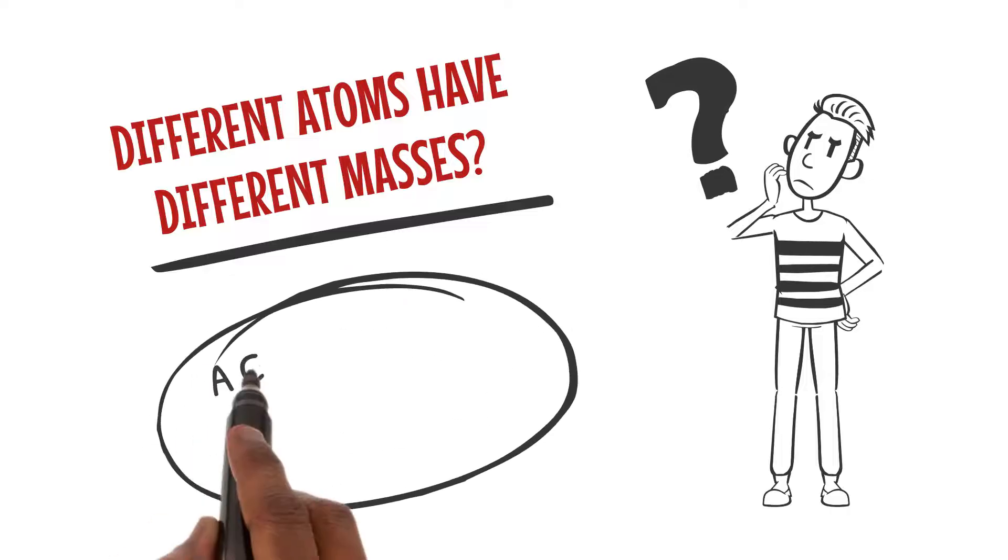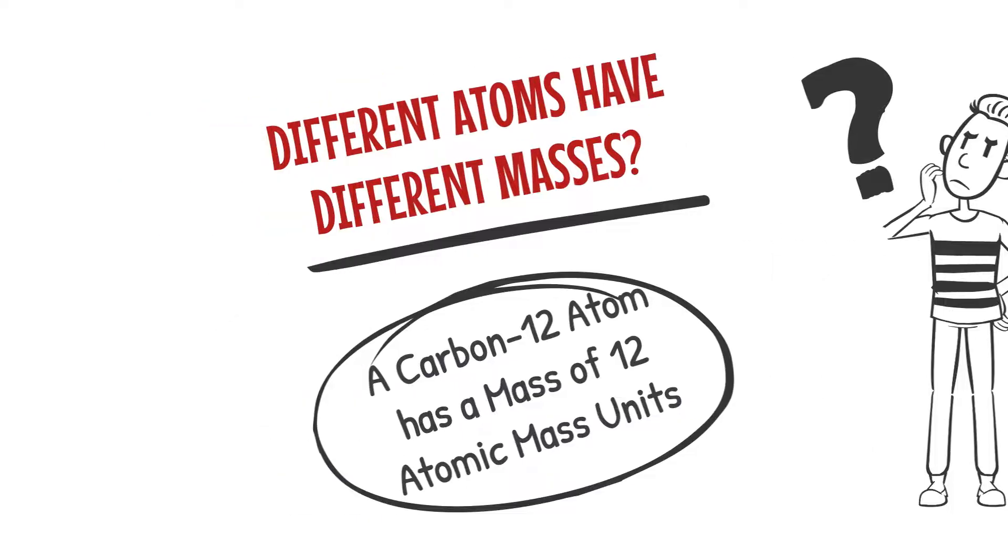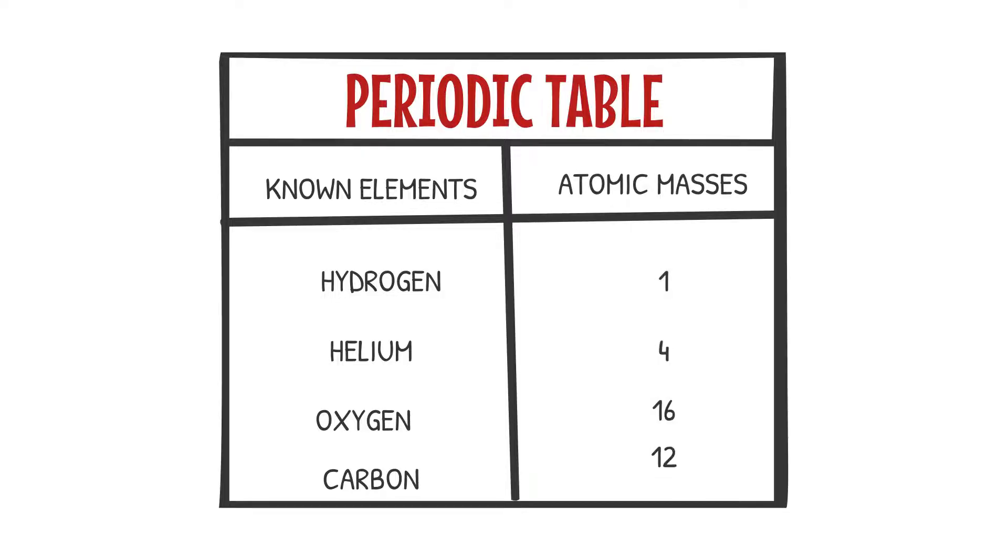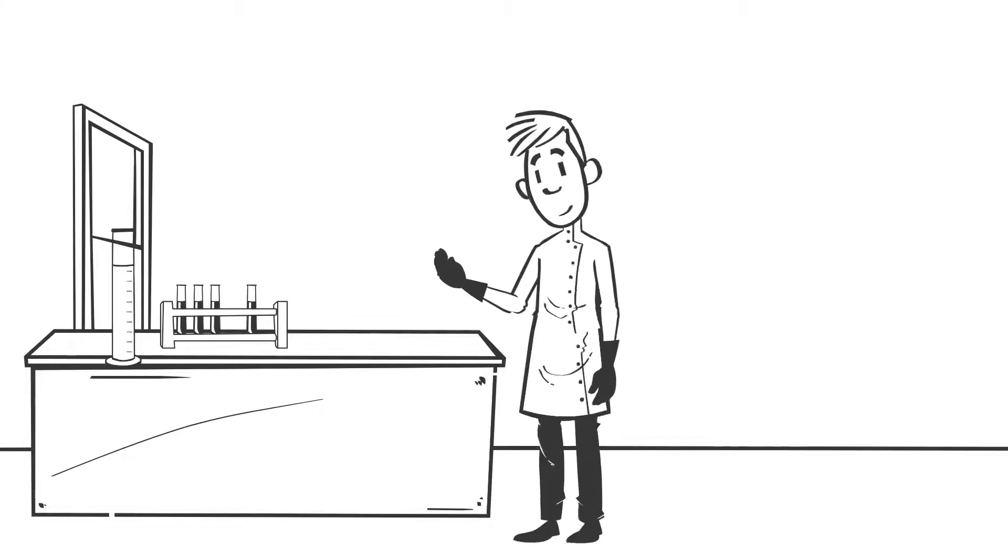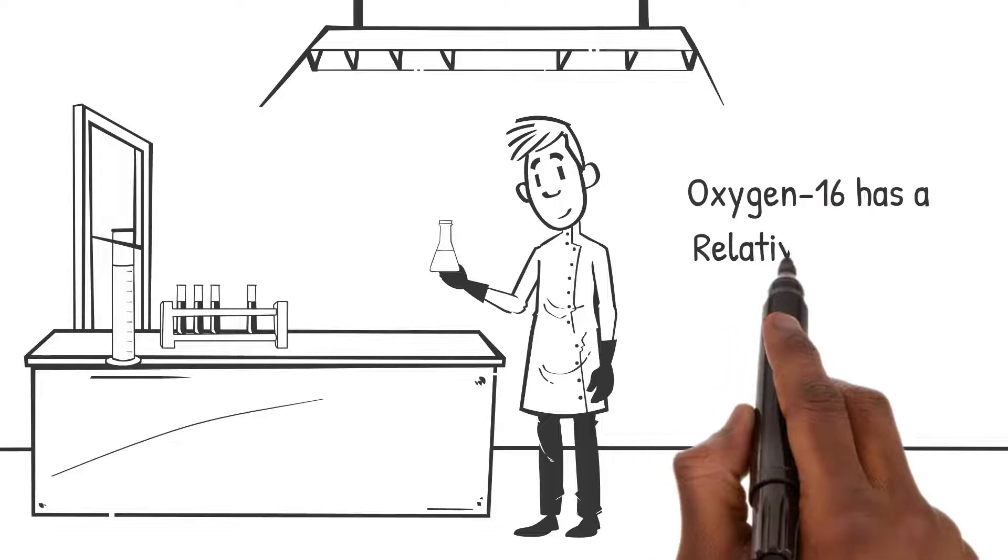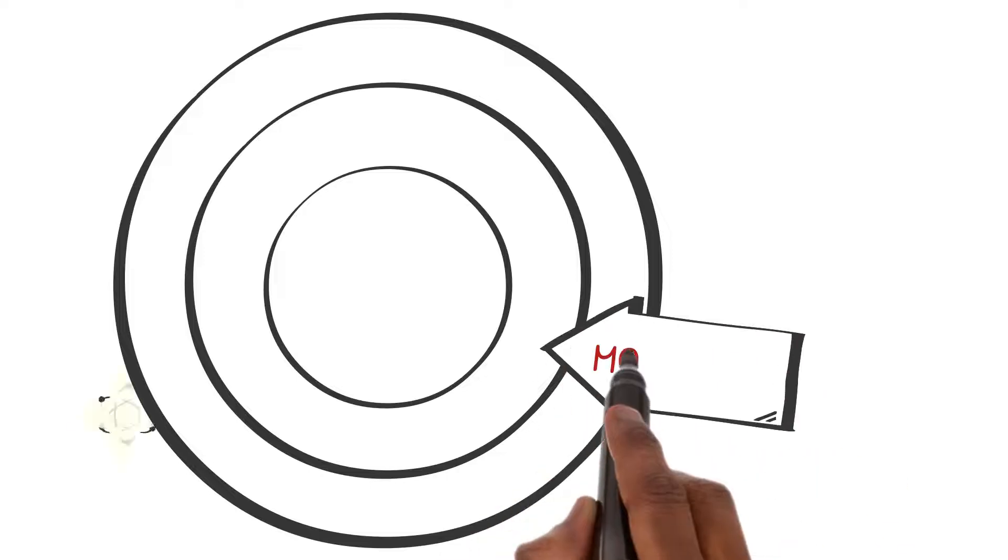Did you know that different atoms have different masses? For example, a carbon-12 atom has a mass of 12 atomic mass units. Enter the periodic table—this magical chart lists all the known elements and their atomic masses. Scientists have carefully measured and calculated the masses of different atoms. For instance, oxygen-16 has a relative atomic mass of 16 amu.